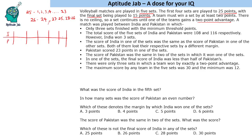The first condition is that only 3 sets finished with the minimum threshold points. Minimum threshold point is basically 25, or 15 in the last round. The total score of the 5 sets: India scored 108 and Pakistan scored 116.